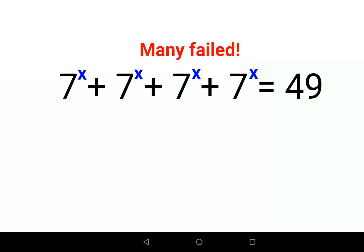Welcome everyone. Today we're going to solve a nice indices problem where we have 7^x + 7^x + 7^x + 7^x = 49. Now, a lot of people think this equals 7 squared, but after this, things get tricky.